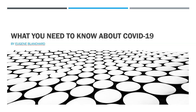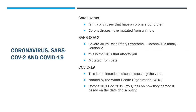Hi there. What this presentation is about is what you need to know about COVID-19. The very first thing is we're going to get some definitions. You've probably heard these terms: coronavirus, SARS-CoV-2, and COVID-19. The coronavirus is a family of viruses that have a corona around them — that's where they get the name from. The corona looks like a crown. Coronaviruses have mutated from animals. So coronavirus is the family of viruses.